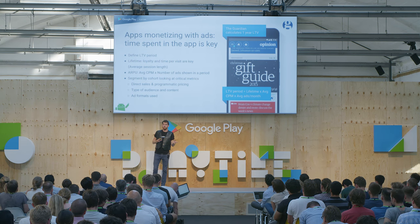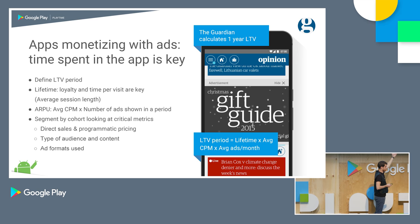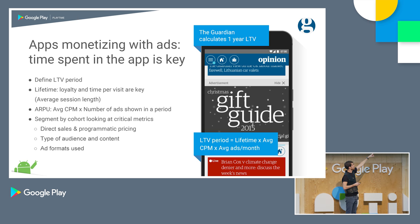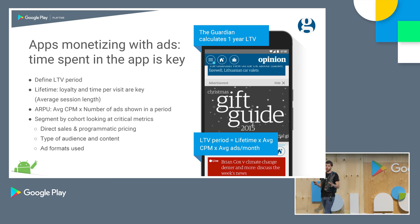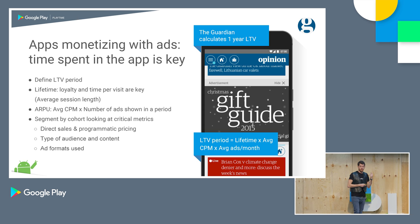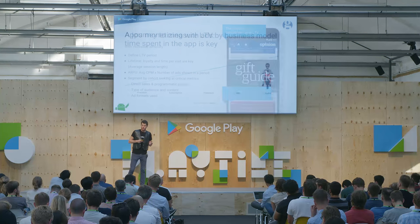Bring all ad pricing down to one metric — most commonly CPM. Then the formula becomes: LTV period (e.g., 180 or 360 days) = lifetime × average CPM × average number of ads per month. The Guardian adapts this base formula. They segment by four different cohorts based on user loyalty and number of impressions, and then segment those cohorts further by geography. They use the same LTV calculation for mobile web and apps to compare them.